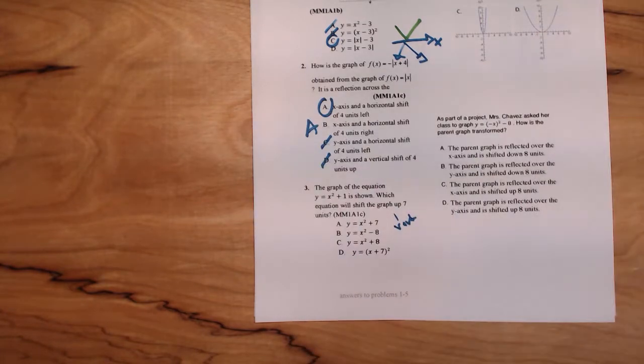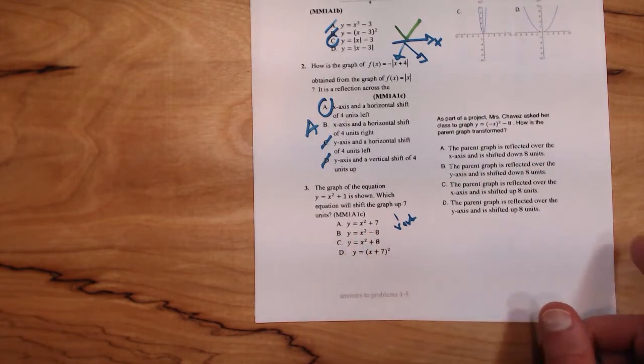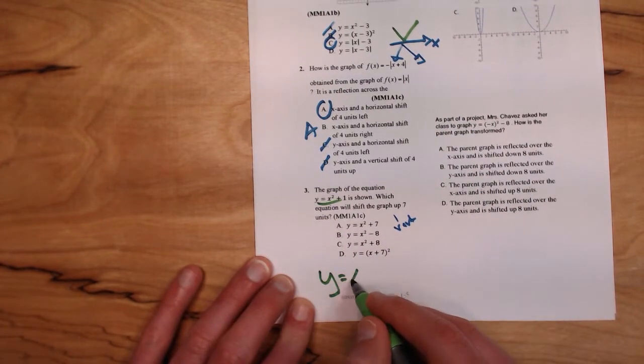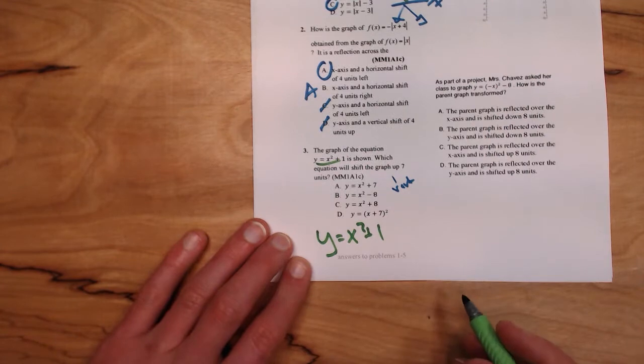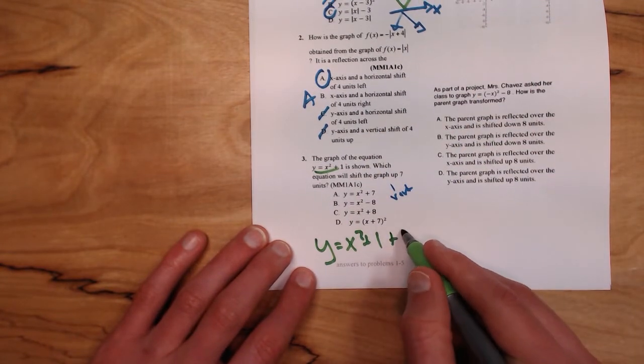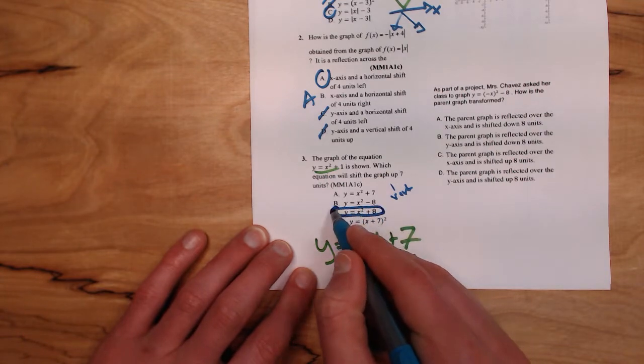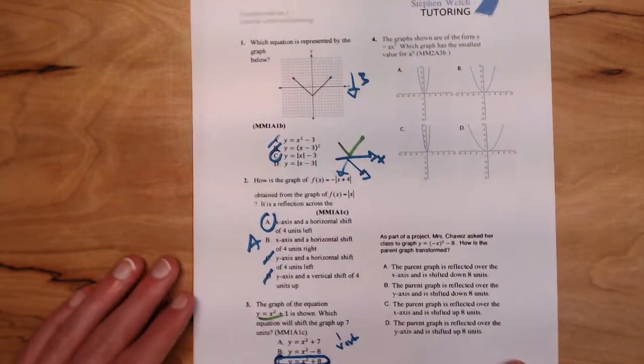We want to go up and we'd like it to go up 7 units. So what we would have here is our original equation, y = x² + 1, and now we're going to move it up 7, so plus 7. And 1 plus 7 is just 8, so our answer choice has got to be C, y = x² + 8.